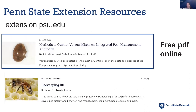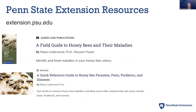I want to promote a few Penn State Extension products. You can find for free online the Methods to Control Varroa Mites: an IPM Approach fact sheet. We also have a beekeeping 101 class if you're interested in an online format, and a guide to many honeybee problems — American foulbrood, European foulbrood, and on — that may be beneficial if you're not good at recognizing other diseases. All of that is available on the Extension website. Thank you, and I'd be happy to take questions.